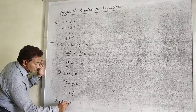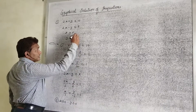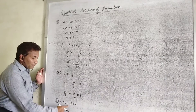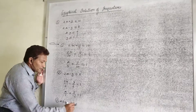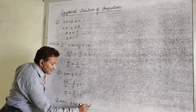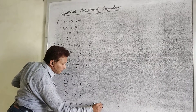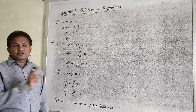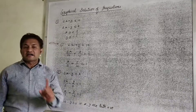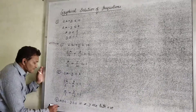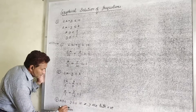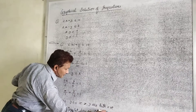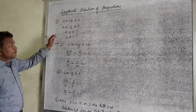The last conditions are x greater than or equal to 0 and y greater than or equal to 0. These two conditions represent that x is positive and y is positive — that is, x and y are both positive. As x and y are both positive, the solution set or the feasible region must lie in the first quadrant. So therefore, the solution set lies in the first quadrant.